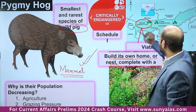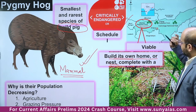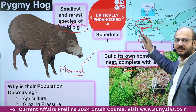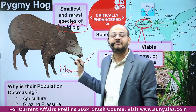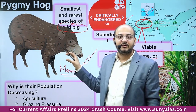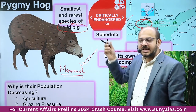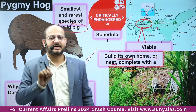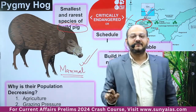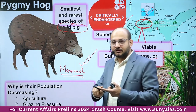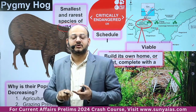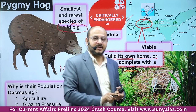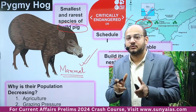Pygmy Hog is critically endangered and its viable population is found in Manas National Park. The Manas River is a tributary of the Brahmaputra River. Manas National Park is located in Assam and Arunachal Pradesh. Questions often ask which state it is in. We should also look at other national parks in that area — Orang National Park and Pobitora Wildlife Sanctuary nearby.